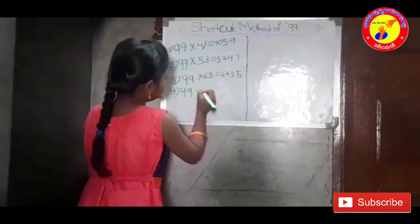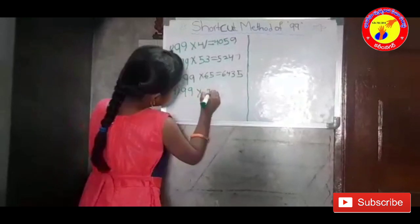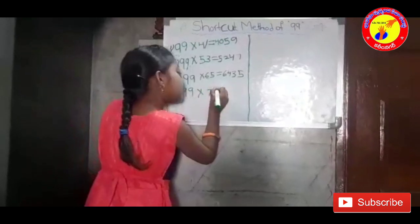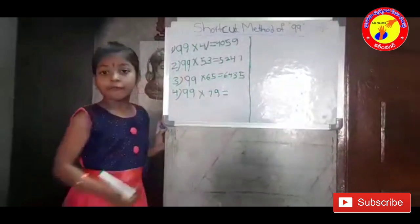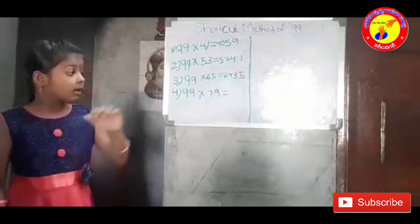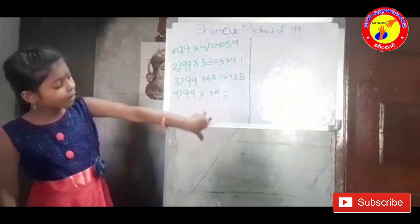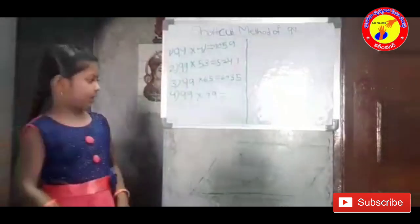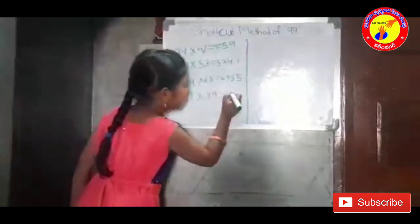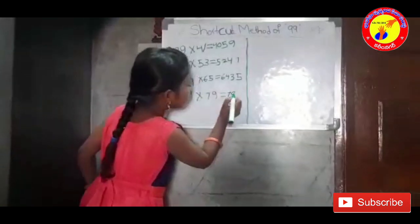99 into 79. In 79, what number means 9 will come? Subtract 1 — what number will come? It is 78.